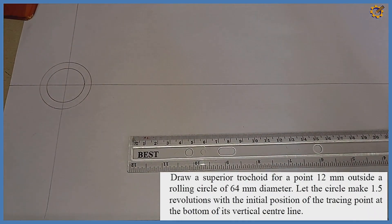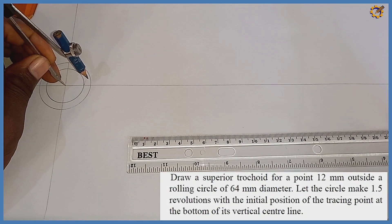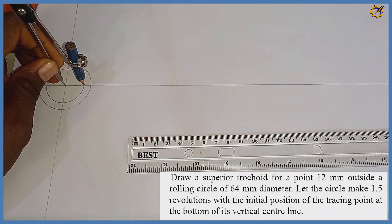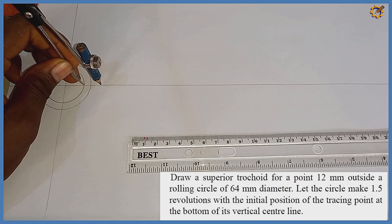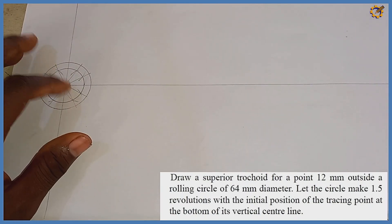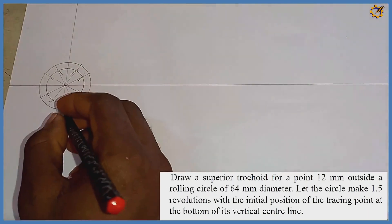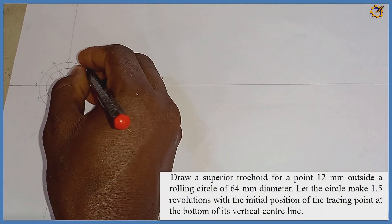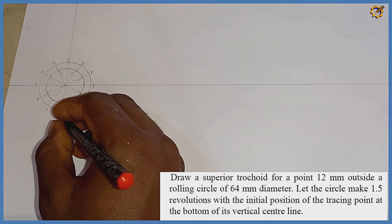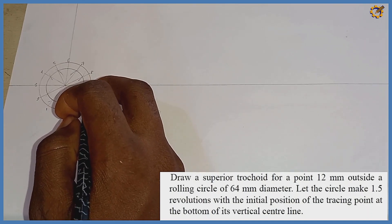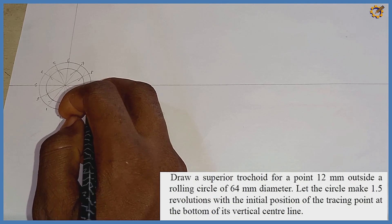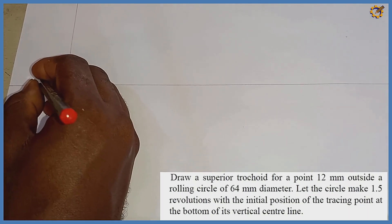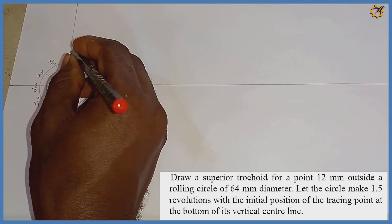Next I divide the inner circle into 12 equal parts. I number them starting from the base: 0, 1, 2, 3, 4, 5, 6, 7, 8, 9, 10, 11, then 12 completes one revolution. Since the question requires 1.5 revolutions — one and a half — I continue numbering: 13, 14, 15, 16, 17, and 18, giving 18 total divisions.